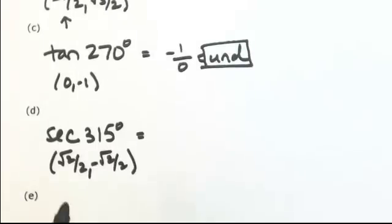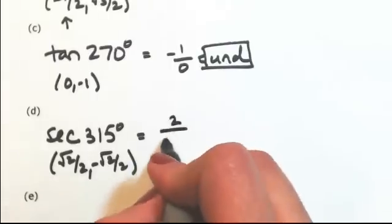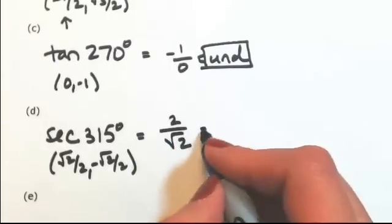Okay, secant is the reciprocal of cosine. Cosine is √2/2, so secant is going to be the reciprocal of that, and then rationalizing.